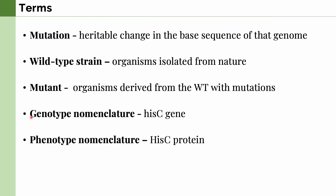A short note on the nomenclature of genotypes and phenotypes: we usually encounter genes and proteins that have the same name, but the way we can tell them apart is that the gene would always begin with a lowercase letter, and the protein would begin with an uppercase letter. So here we can see two examples: the HIS-C gene that begins with a small letter H, and the HIS-C protein, which begins with a large letter H.